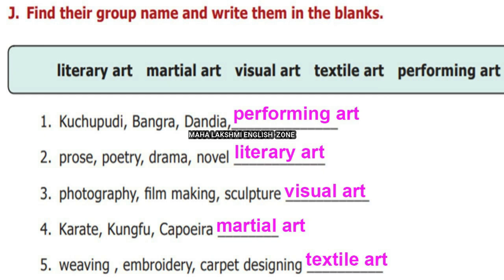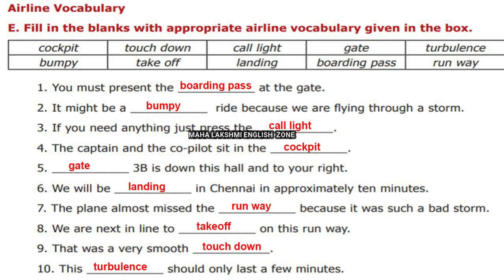Prose, poetry, drama, novel — everything comes under literature, so it comes under literary art. Photography, filmmaking, and sculpture — making statues — these come under visual art. Karate, kung fu, and capoeira come under martial art. Weaving, embroidery, and carpet designing all come under textile art.